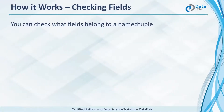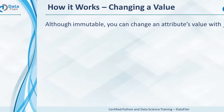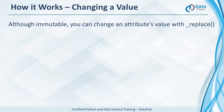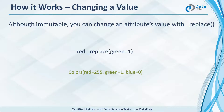To get a list of keys in a dictionary, you use the keys method. To get the names of all the fields in a named tuple, you use _fields. It has the fields red, green and blue. We saw a named tuple is immutable and cannot be altered. But using the replace method, we can alter its attributes. Replace green's value with one and you have successfully done it with replace.